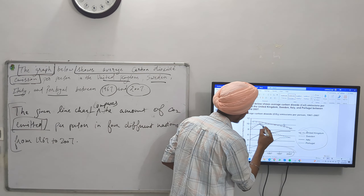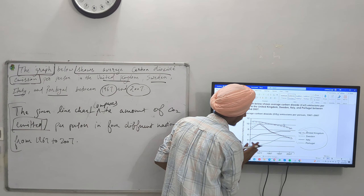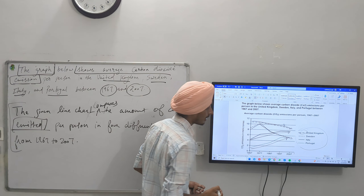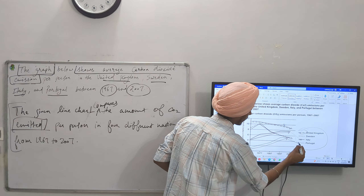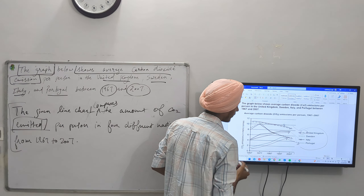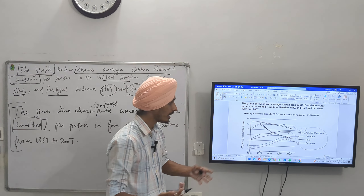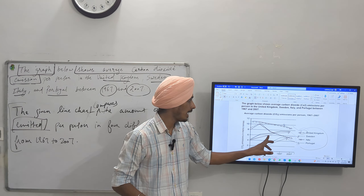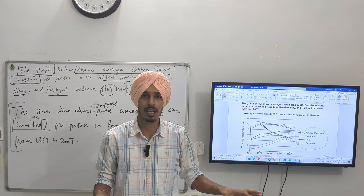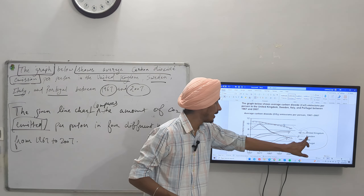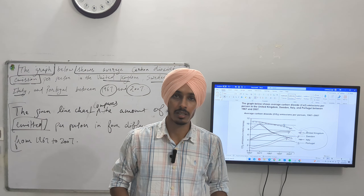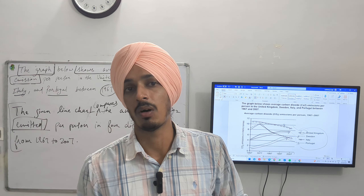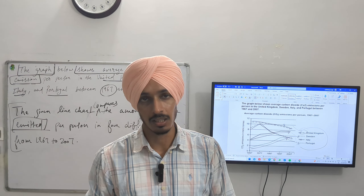If we see the amount of CO2 in United Kingdom, it decreased. But if we see Italy and Portugal, the amount of CO2 emission increased. So we can say that over the period, the CO2 emission increased in Portugal and Italy. However, there was a decrease in the amount of CO2 emission in United Kingdom and Sweden. This is how we make two sentences — one about maximum and minimum value, the second about increase and decrease in the amount.